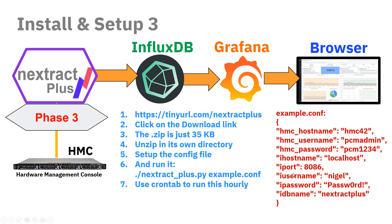Once you've set this up and edited it — you need those curly brackets; the filename is shown at the top — we're now going to run it. Just run it by hand and we can see the output coming out. It explains what's going on. You run: python nextract_plus.py example.conf, or whatever you renamed that file to. It'll output a couple of screens worth of things if you've got a handful of machines. Watch that it runs cleanly, and then use crontab to run it hourly.